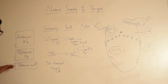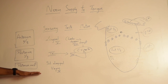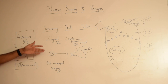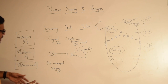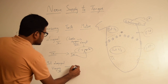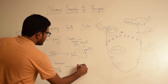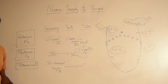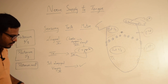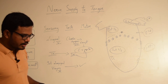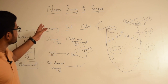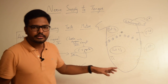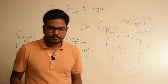And for the posterior most part of the tongue, the taste sensation as well as the general sensations are carried out by the same internal laryngeal branch of the vagus nerve. So these are in brief the general sensations and taste sensations of the entire tongue.